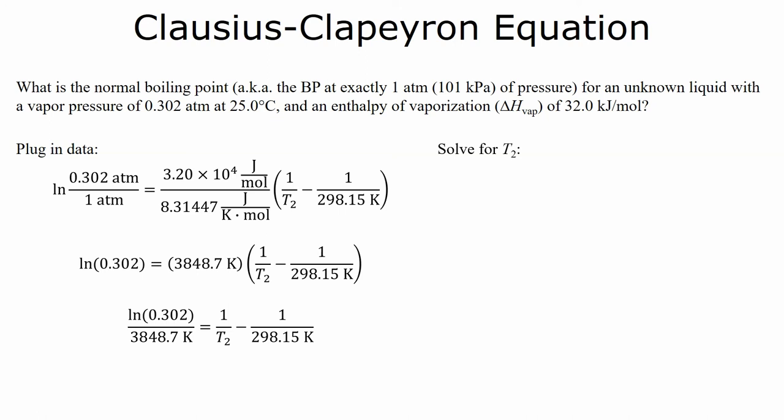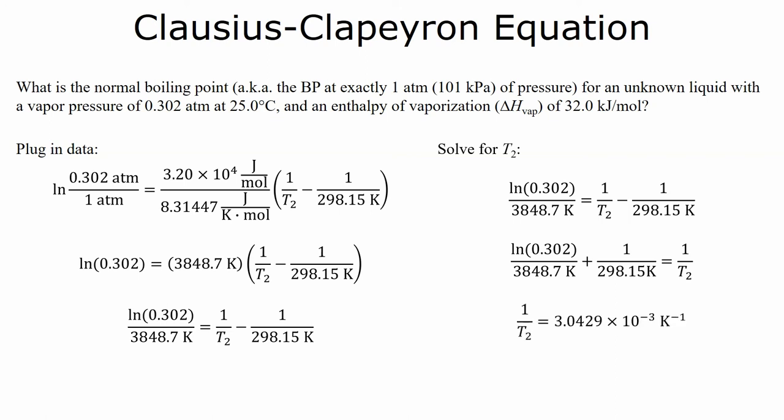Now, once we've simplified the equation a little bit, let's solve for T2. Be very careful with your algebra at this point. And if we take a look at the units, we notice that so far we have units of inverse Kelvin. So, if we need to solve for T2 here, we need to take the inverse of both sides.